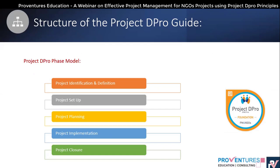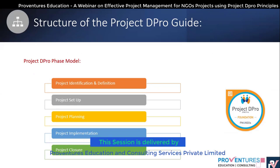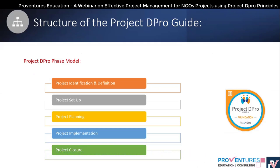The Project DePro phase model has five phases. The first is project identification and definition, where we identify the needs and the right set of stakeholders. In a project, there are many people involved — donors, beneficiaries, project sponsors, the project team, and the project manager. We need to identify stakeholders and define their roles in the project.